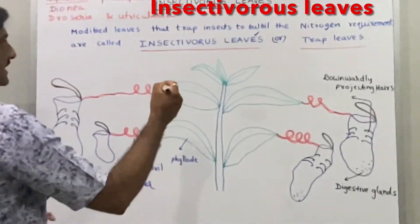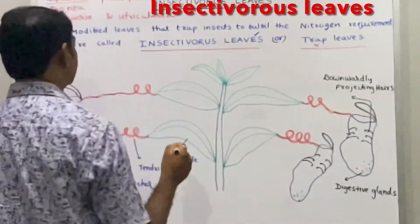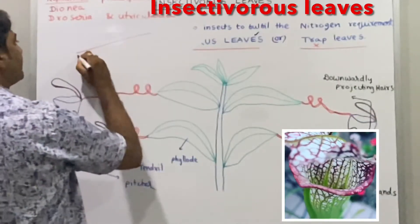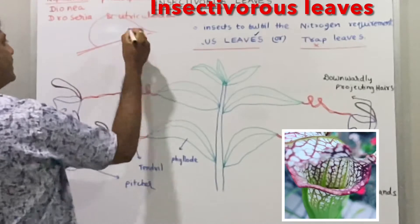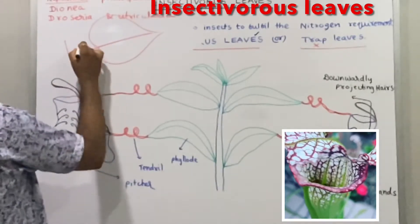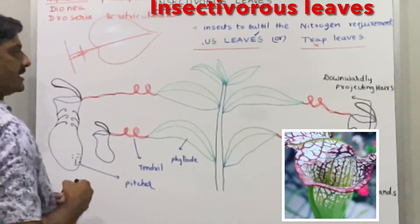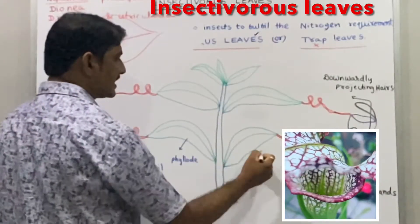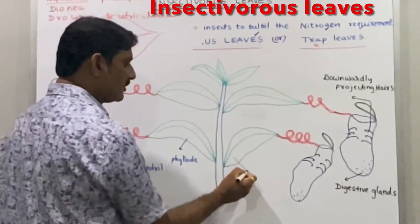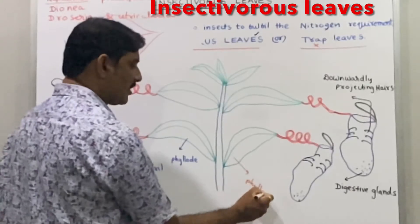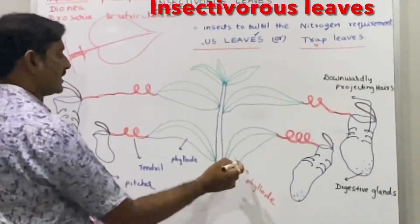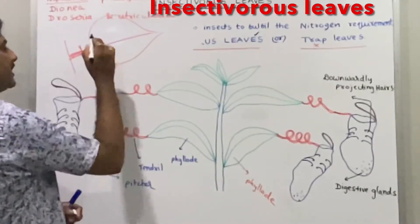In Nepenthes, the leaf is modified in three ways. The leaf has a petiole; the lower half of the petiole modifies into a green, wing-like structure that performs photosynthesis, called the phyllopodium (phyllode). The upper half of the petiole modifies into a coiled, delicate structure called a tendril.